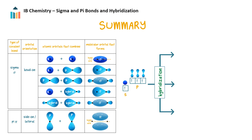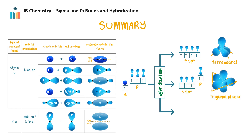Hybridization is the mixing of valence atomic orbitals during bonding, and it can occur in different ways. Sp3 hybridization occurs when an s orbital and three p orbitals mix, forming four equivalent hybrid orbitals, which arrange themselves tetrahedrally during bonding. Sp2 hybridization occurs when an s orbital and two p orbitals mix, forming three equivalent hybrid orbitals, which arrange themselves in a planar triangle during bonding. This leaves an unhybridized p orbital perpendicular to the plane.